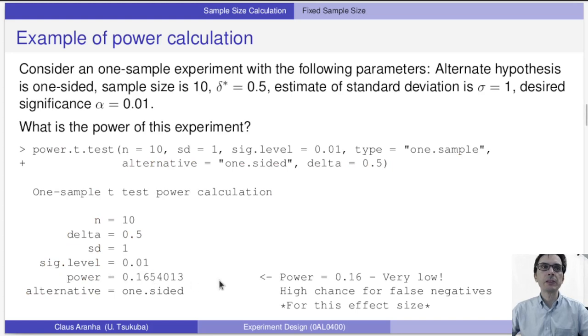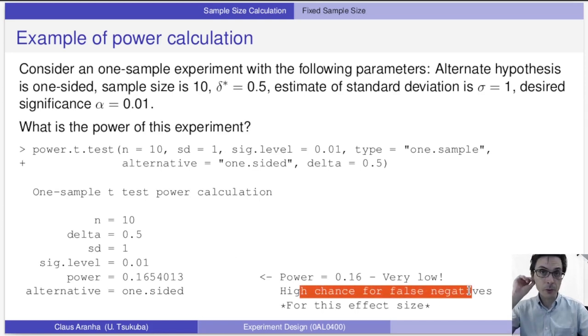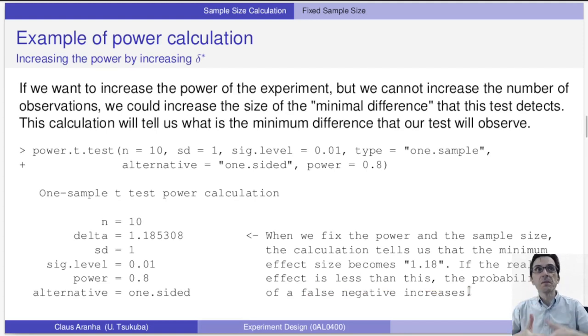So the power here is 0.16. So this is a β of 0.84. So this is a very low power. So this experiment under these characteristics is a very, very low-powered experiment. There's a high chance for false negatives for this effect size. So how can we adjust the power? How can we increase the power of the experiment? If we want to increase the power of the experiment, we can increase the number of observations. If we cannot increase the number of observations, we could increase the size of the minimal difference that this test detects. This calculation will tell us what is the minimal difference that our test will be able to observe.